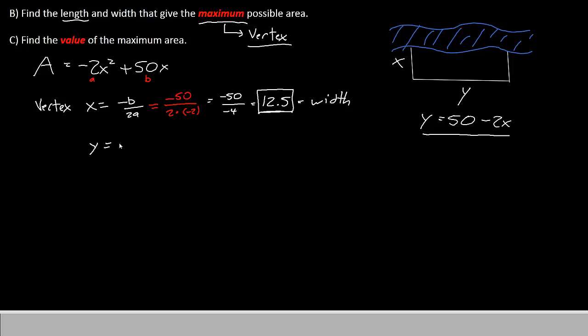So we'll say y equals 50 minus 2x. Now, we've already found x. It's 12.5. So we'll say 50 minus 2 times 12.5. This gives us 50 minus 25. And 50 minus 25 is 25. This is our length.